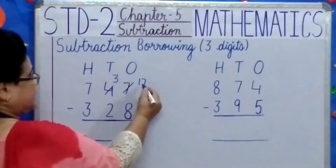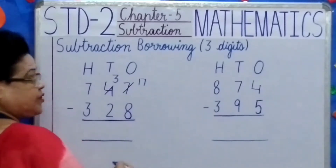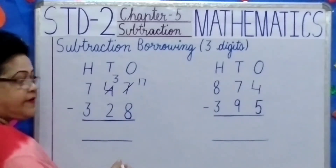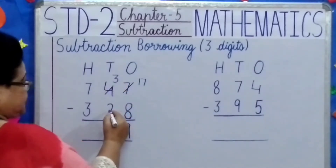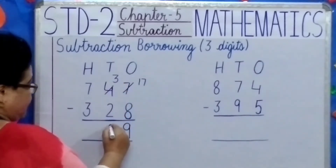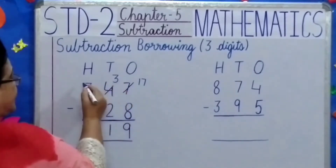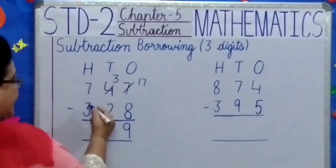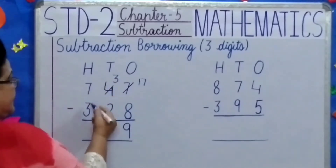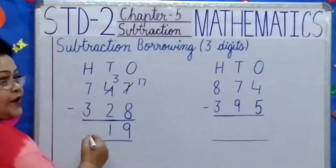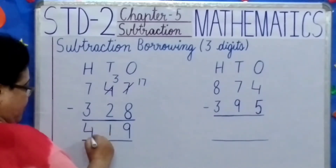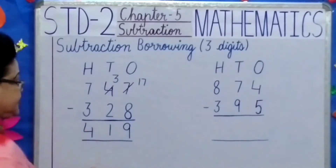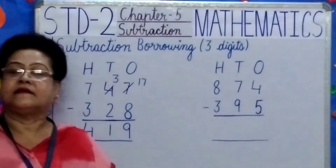Now, 17 minus 8, what do we get, children? 9. 3 tens minus 2, we get 1. Now come to the hundreds place. We have 7 and 3. 7 minus 3, what do we get? 4. So what is your answer, children? 419.